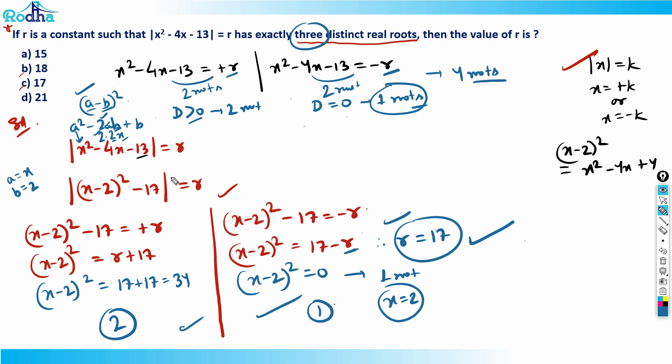So r = 17 is the answer. A nice question from CAT 2021 Slot 1. You need to have all these concepts clear before you can solve such questions. I hope you got it — thank you.